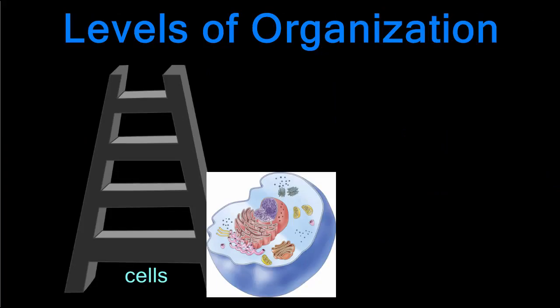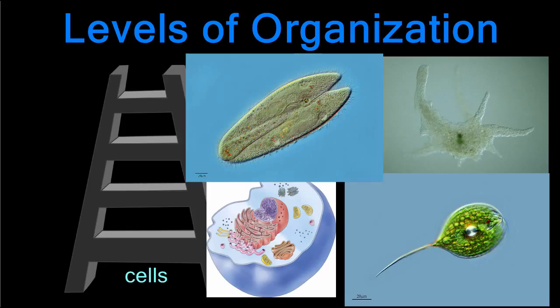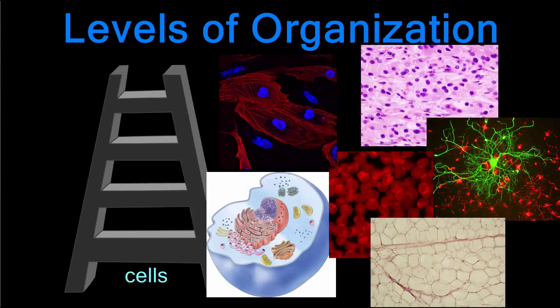For some organisms, the ladder of life ends at cell, because they are unicellular — made up of just one cell. These organisms must complete all the tasks for survival by themselves. They must accomplish with one cell what we do with trillions of cells. These organisms are loners and depend only on themselves for survival.